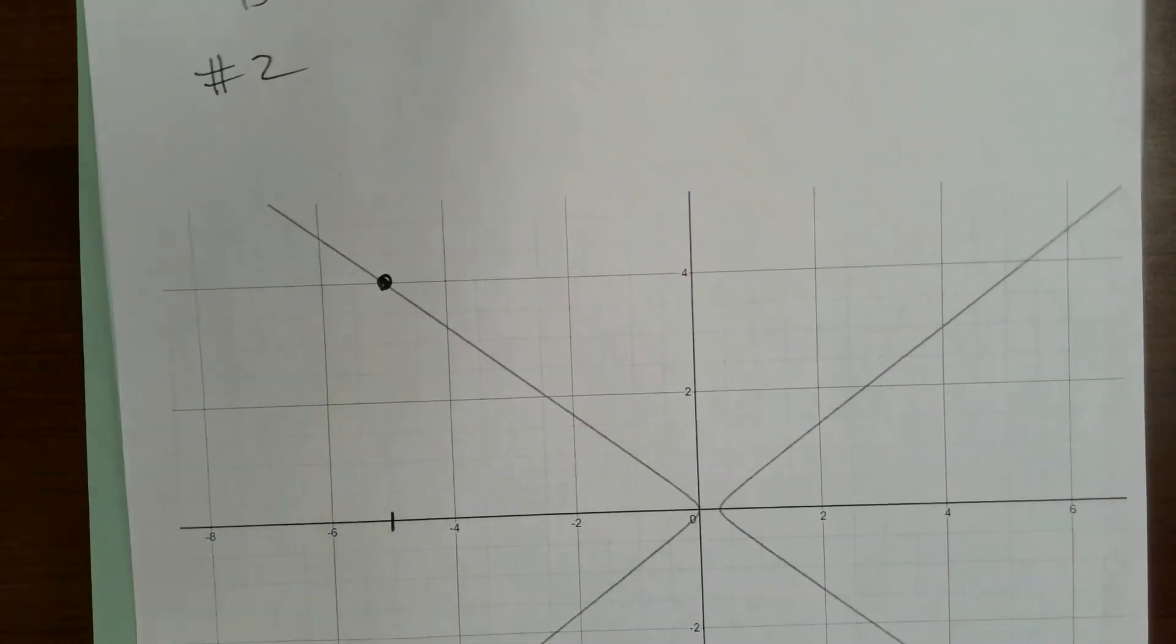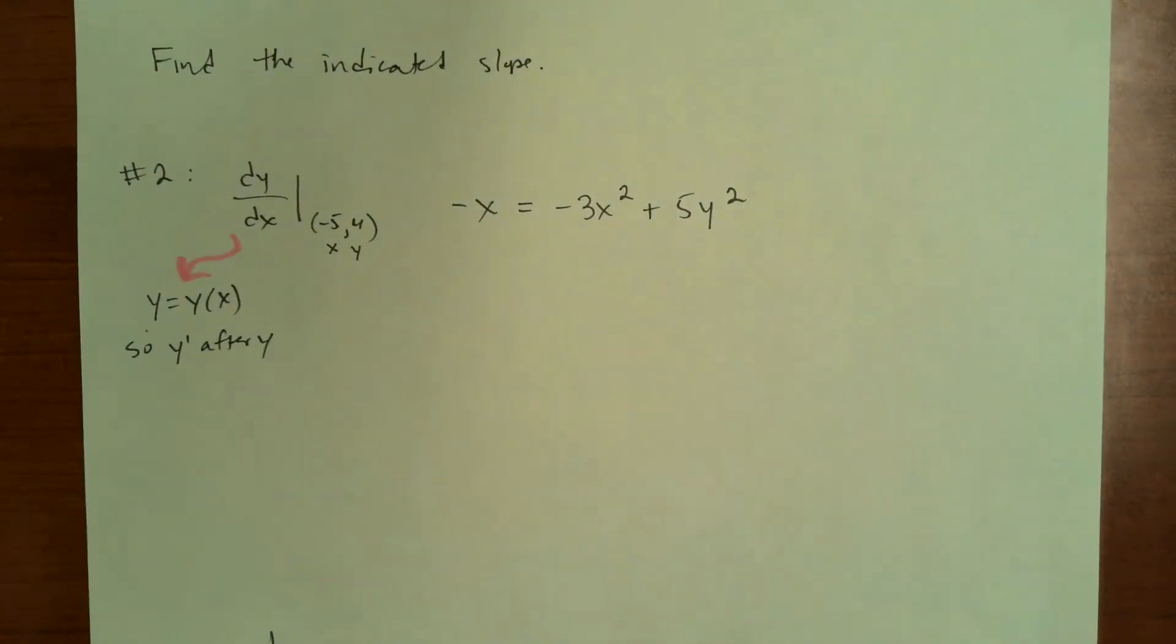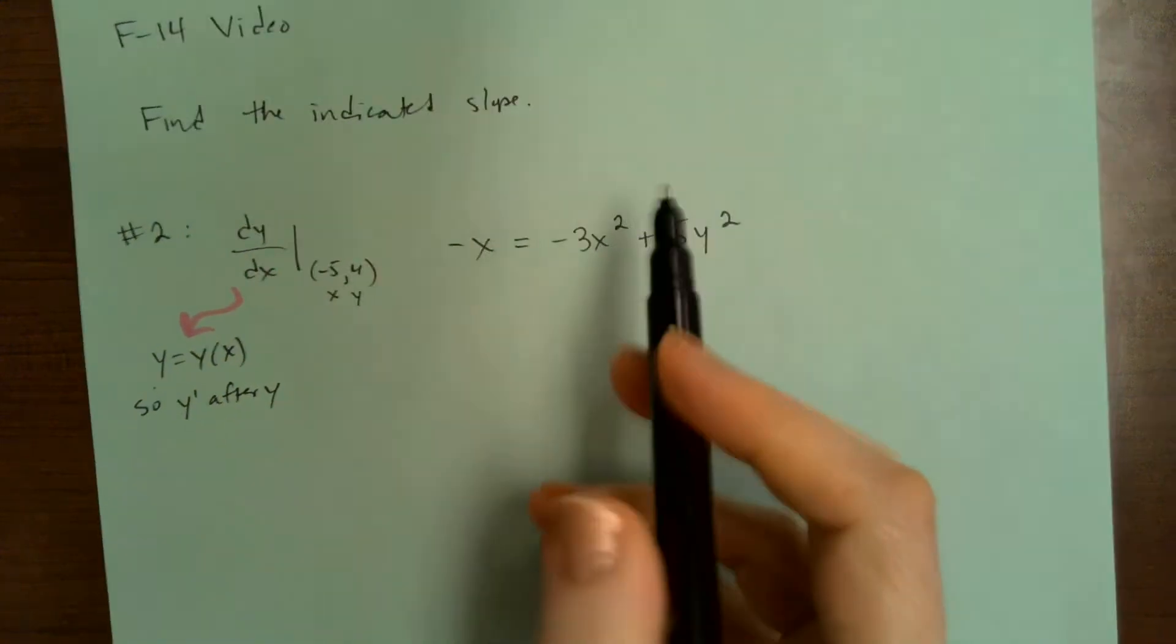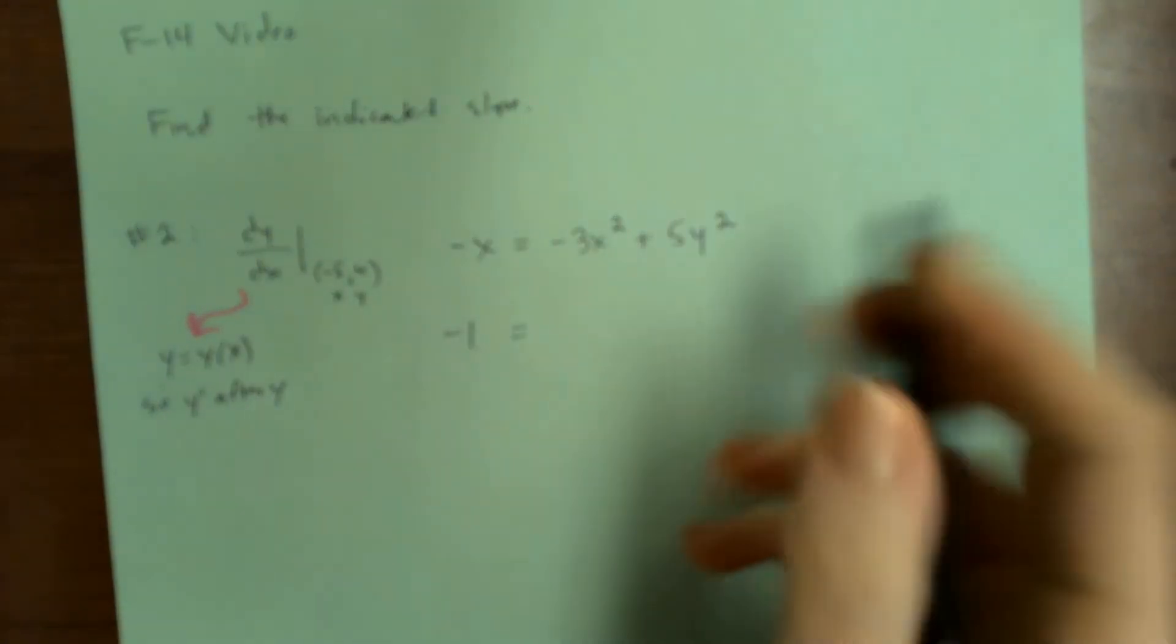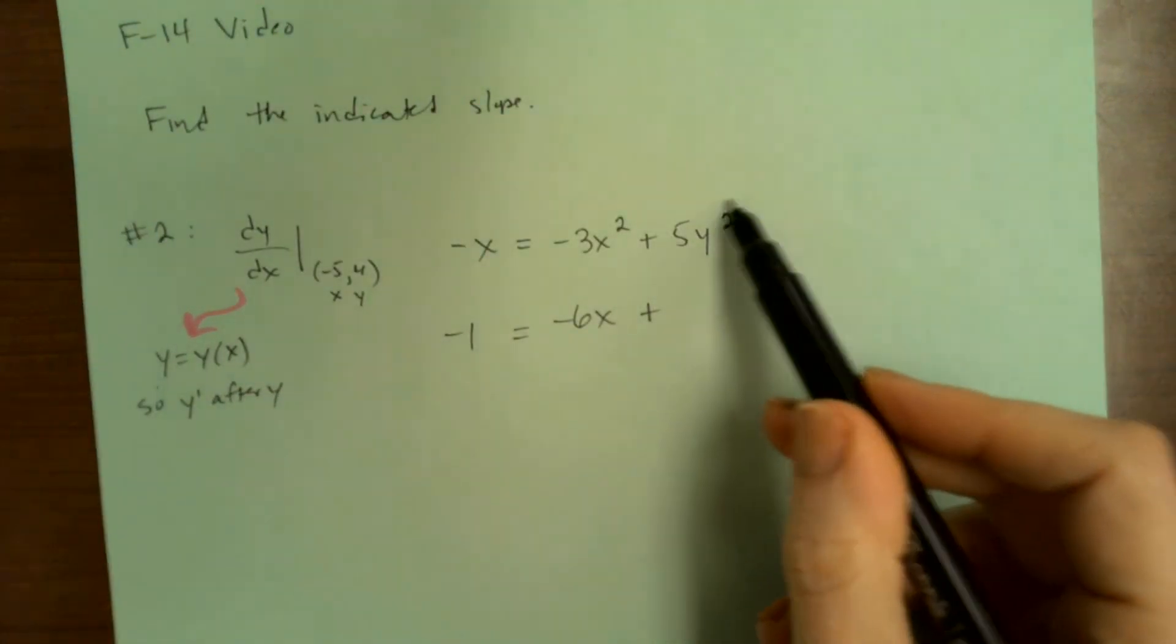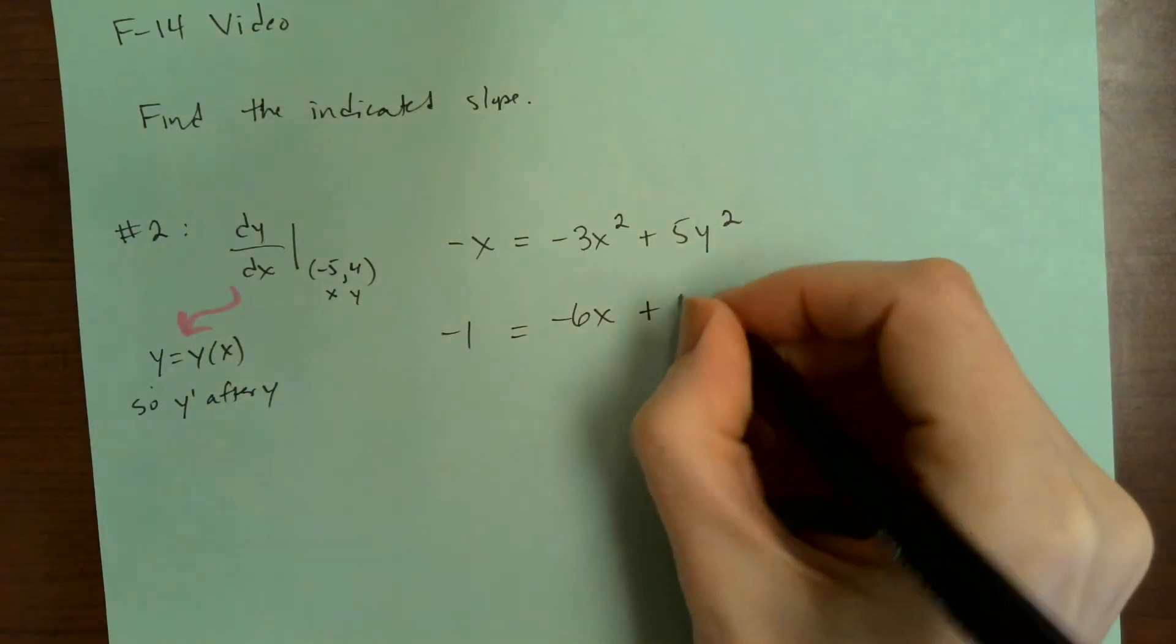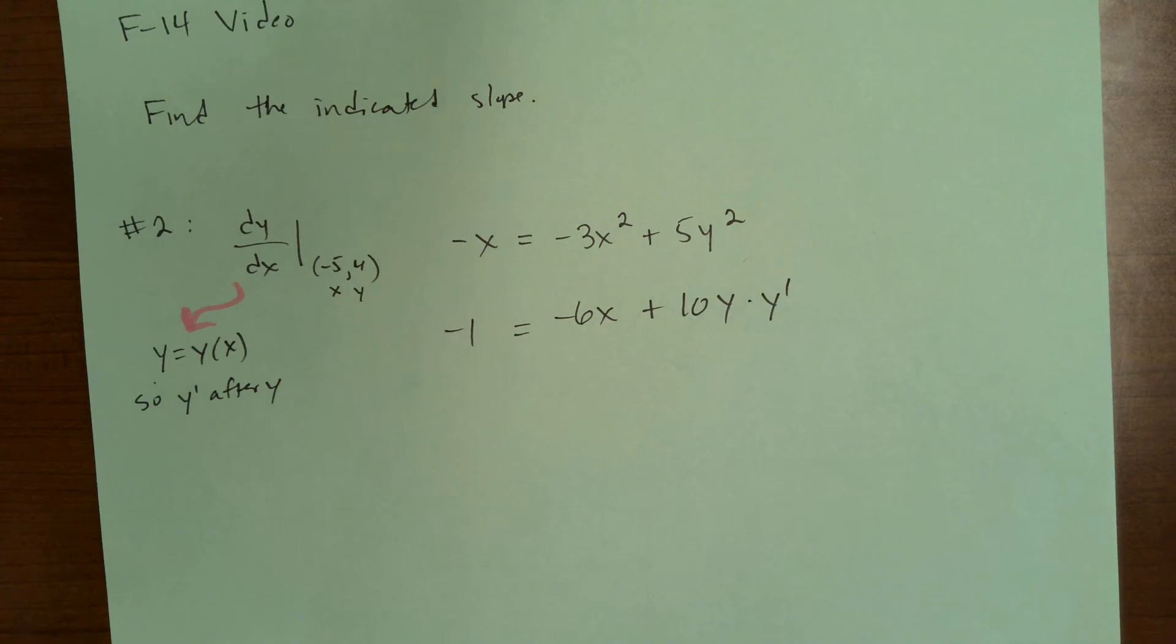But we're going to do it using calculus. So we've got to take the derivative of every term of this. So the derivative of negative x is negative one. The derivative of this is negative six x plus what's the normal derivative of five y squared. It's 10 y, but then you multiply it by y prime.